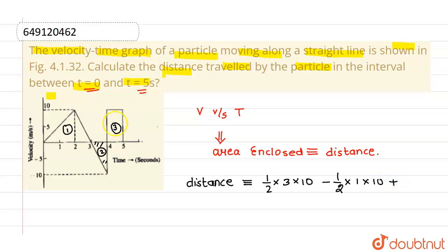Plus, this is a rectangle, the third figure is a rectangle, so its area will be length into breadth. Length is 1 meter and its breadth is 10 units.